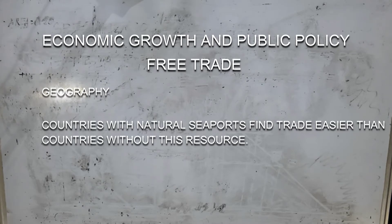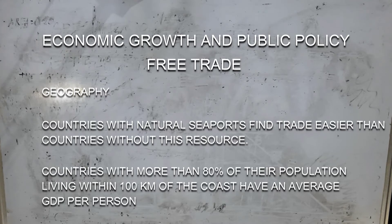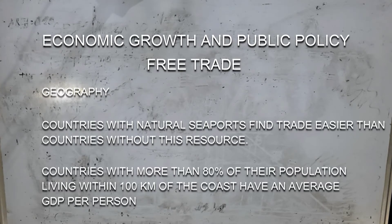Landlocked countries tend to have lower levels of income than countries with easy access to the world's waterways. Countries with more than 80% of their population living within 100 kilometers of the coast have an average GDP per person about four times as large as countries with less than 20% of their population living near the coast. This critical importance of access to the sea explains why the African continent, which contains many landlocked countries, is so poor.